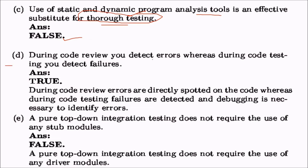Statement d: during code review you detect errors, whereas during code testing you detect failures. This is absolutely true. During code review, errors can be directly spotted in the code, whereas during code testing we find the consequences of errors — their manifestations, which are failures. Then debugging becomes necessary to identify the errors.